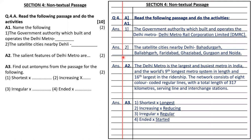The second answer: the satellite cities nearby Delhi are Bahadurgarh, Ballabgarh, Faridabad, Ghaziabad, Gurgaon and Noida.